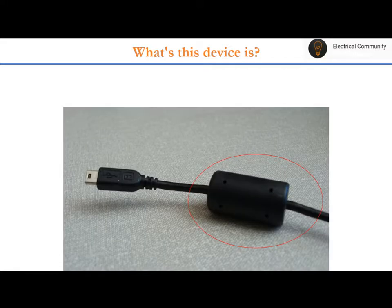This is based on an EMI filter. You may find this kind of device present in many appliances — for example, your VGA cable, your HDMI cable, audio devices, your laptop charger, and many more. This is ultimately an EMI filter; it is useful for filtering out noise signals present in the line.